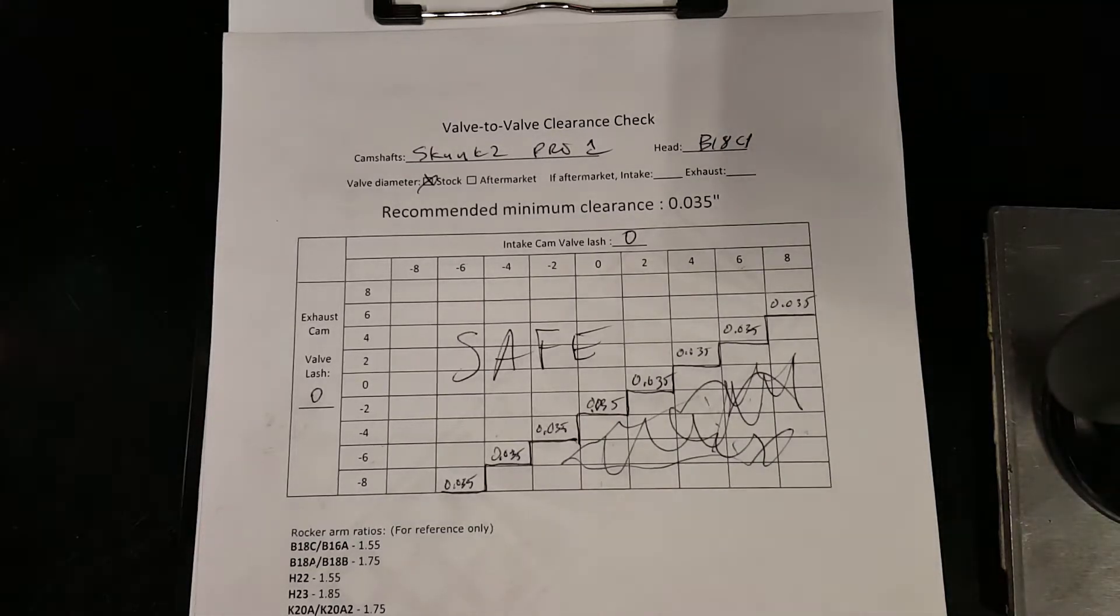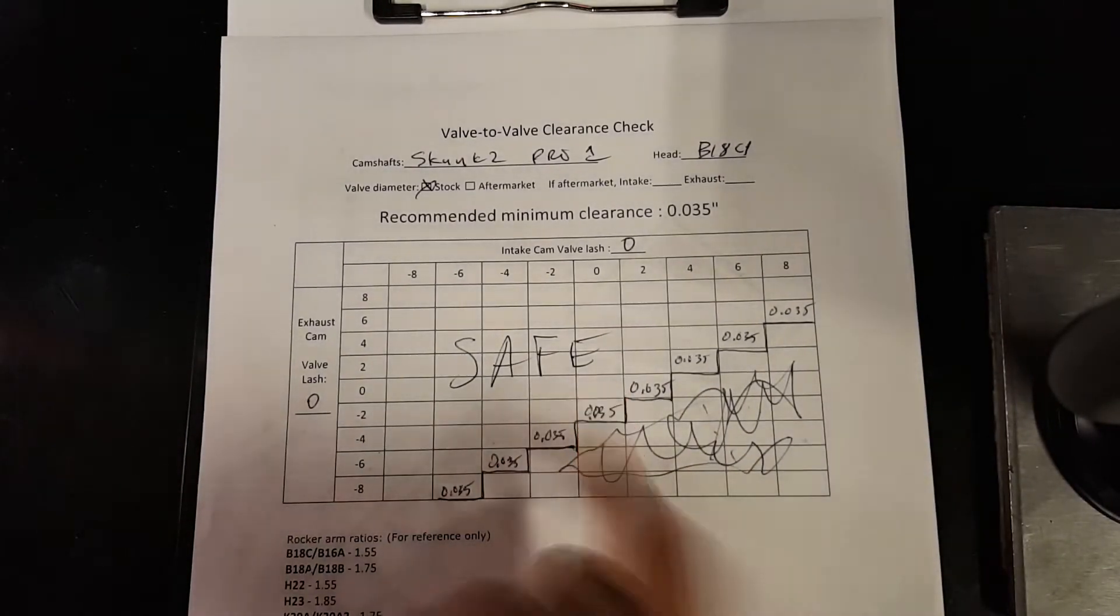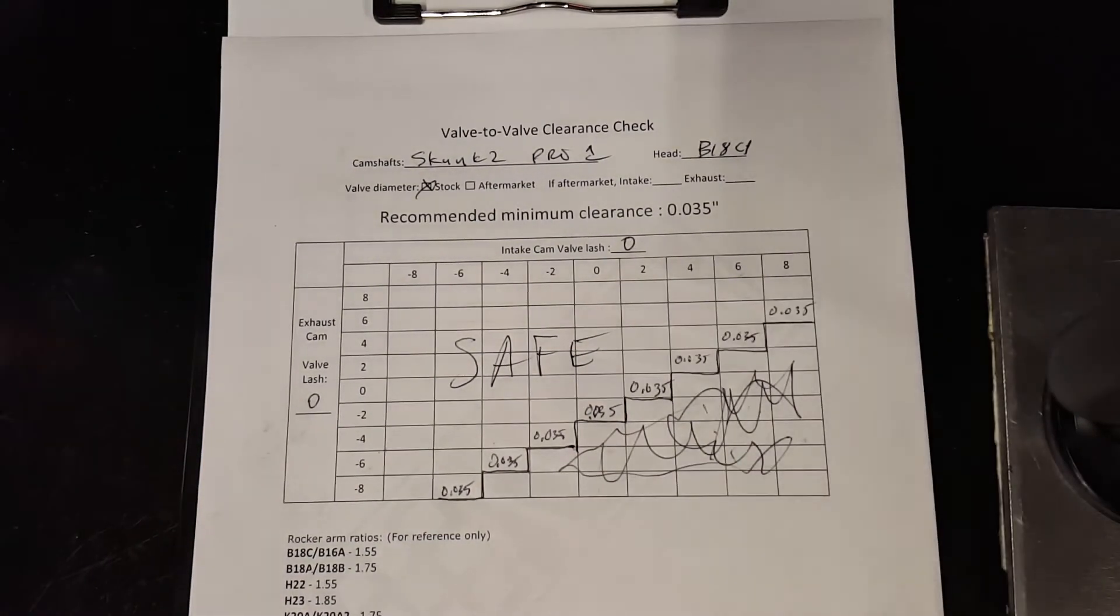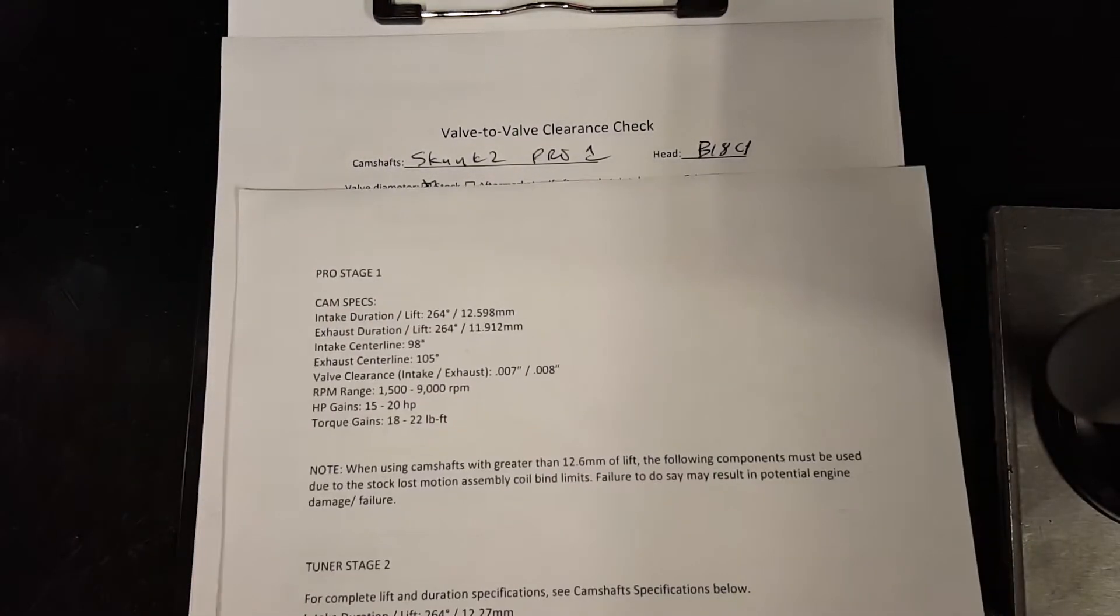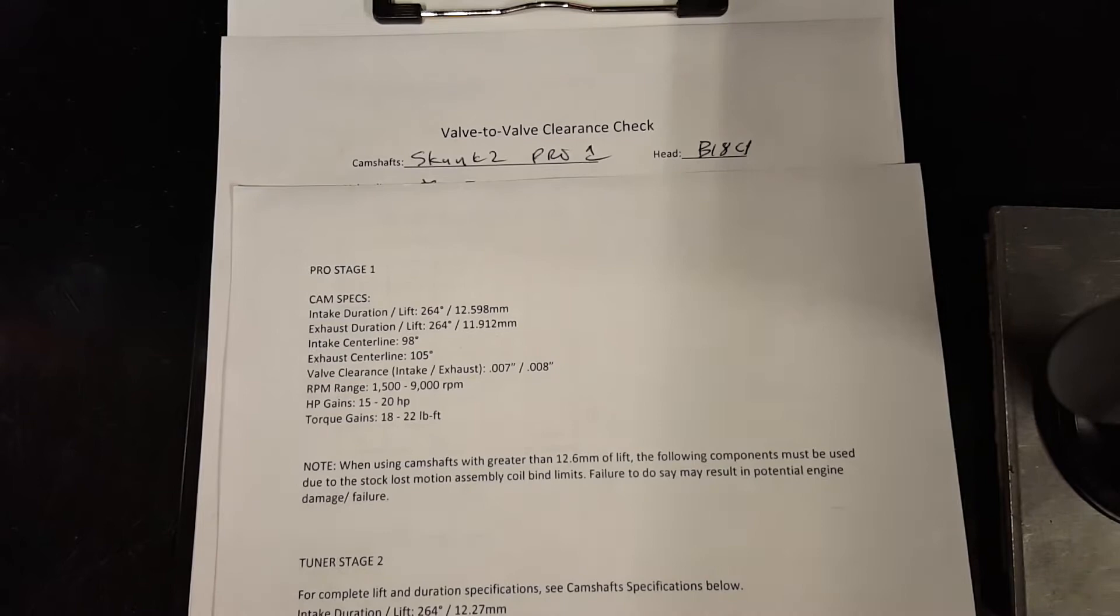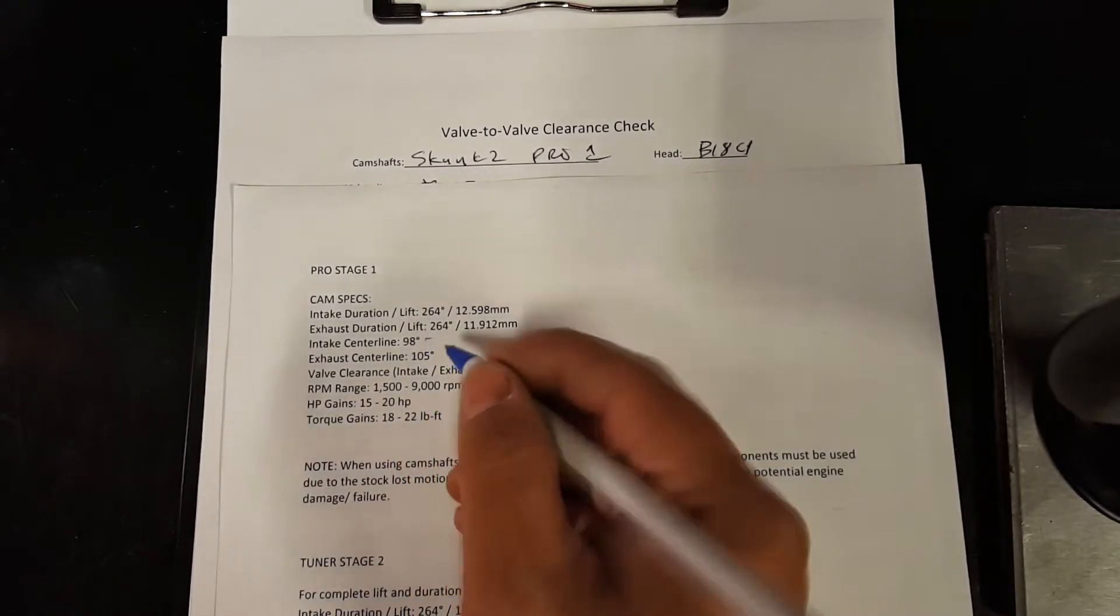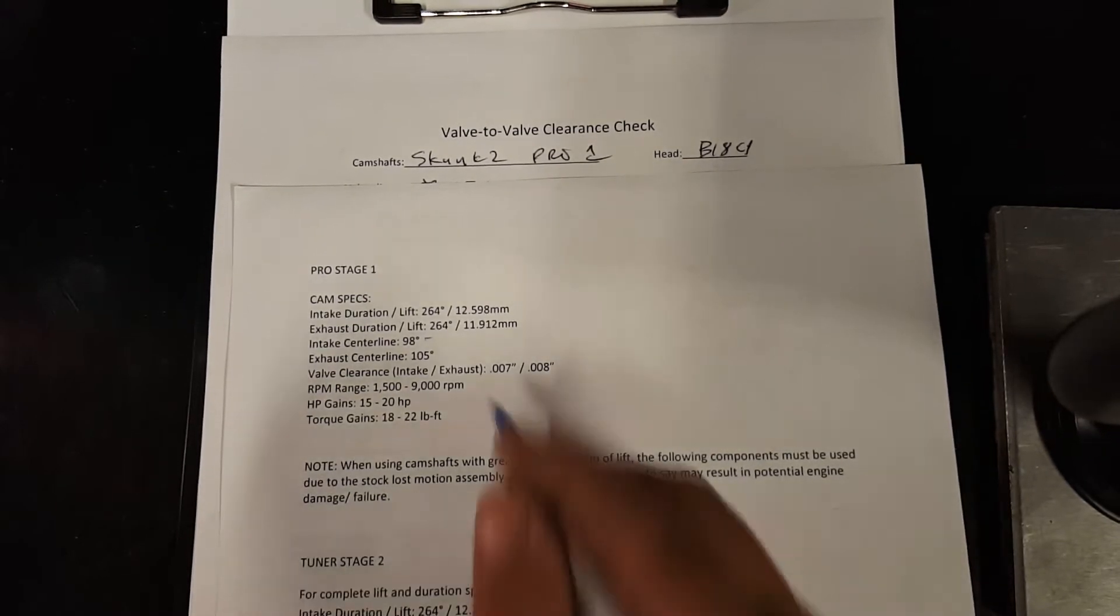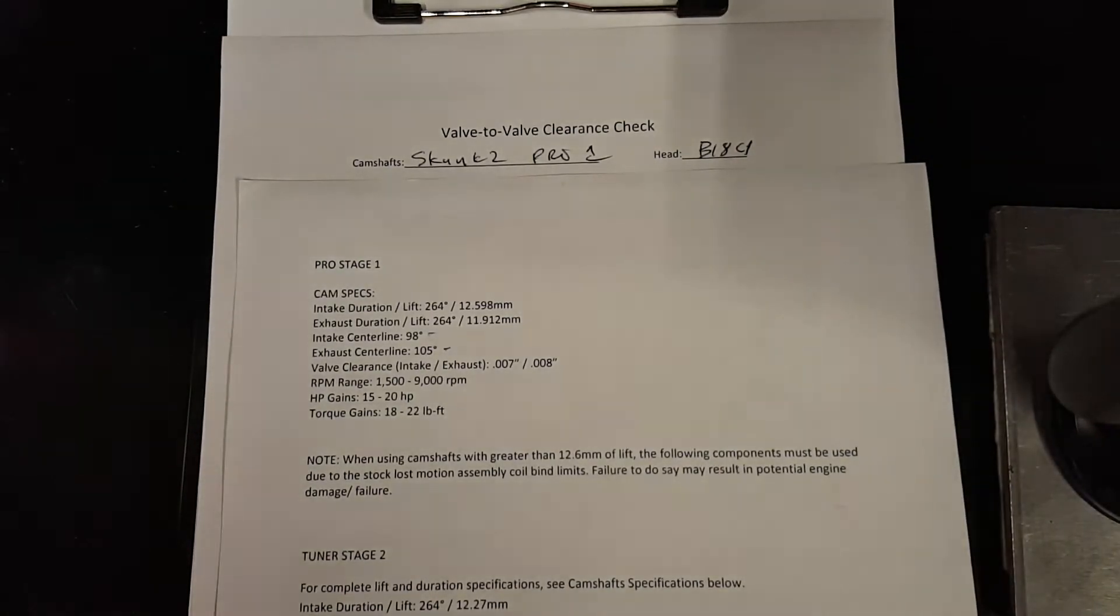We know based on our valve-to-valve clearance we have clearance, so we'll go ahead and start finding where our center lines are. For these cams, they are the Pro Ones and they call for intake center line at 98 degrees after top dead center and the exhaust center line is 105 degrees before top dead center.